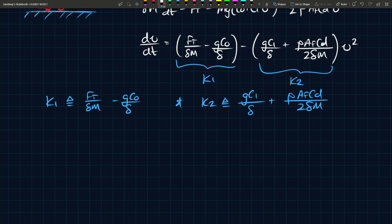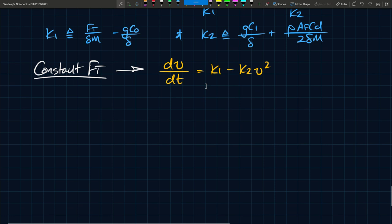So k_1 is defined as F_T over delta M minus gC_0 over delta, and k_2 is defined as gC_1 over delta plus rho A F_CD over 2 delta M. Then you can rewrite the entire expression in terms of k_1 and k_2, but this is assuming constant F_T. Only then can you write this equation in this form. Otherwise your equation would have a variable F_T, so you can't assume that k_1 is a constant. You have dv/dt equals k_1 minus k_2 V squared.